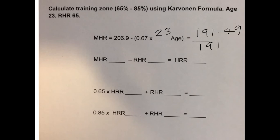Then we can use this answer and the resting heart rate to find the heart rate reserve. So the maximum heart rate we worked out is 191. Subtract the resting heart rate which is 65 and that gives an answer of 126 beats per minute is the heart rate reserve.